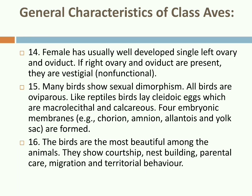Females usually have a well-developed single left ovary and left oviduct; if the right ovary and oviduct are present, they are vestigial and non-functional. Many birds show sexual dimorphism. All birds are oviparous; like reptiles, birds lay cleidoic eggs. A calcareous outer shell protects the egg from the external environment. The eggs are macrolecithal — containing a large amount of yolk. Four embryonic membranes — chorion, amnion, allantois, and yolk sac — are formed, making birds amniotes. Birds show courtship, nest building, parental care, migration, and territorial behavior.